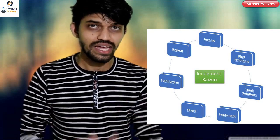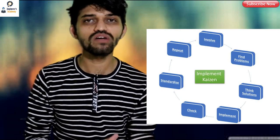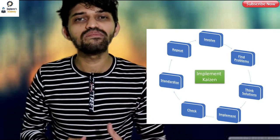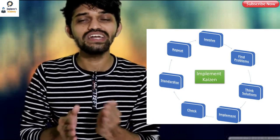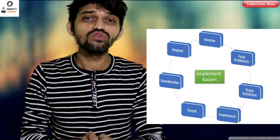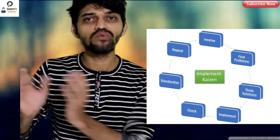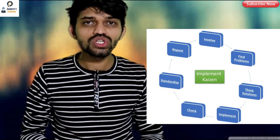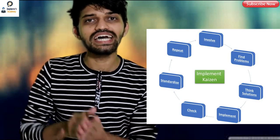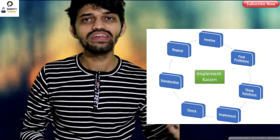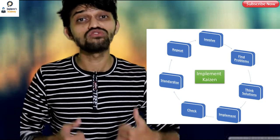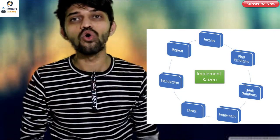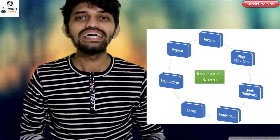Then we have to find the problems, generate the possible number of solutions for that particular problem, and check which is the best possible solution. Then we implement that solution. After implementing, we check whether the solution we implemented is correct or not. Then we standardize that particular process, and then we repeat the whole cycle to implement Kaizen.